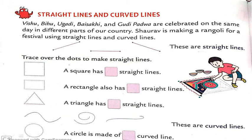Now, trace over the dots to make straight lines. We should trace to make the straight line. A square has how many straight lines? Let's count: one, two, three, and four. So we can say that a square has four straight lines. Repeat after me: a square has four straight lines.